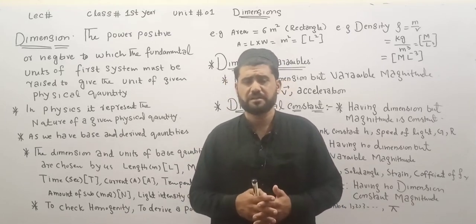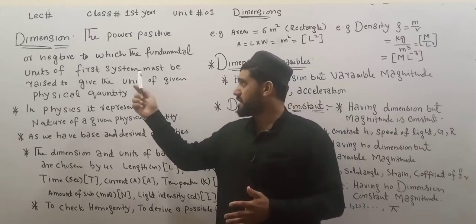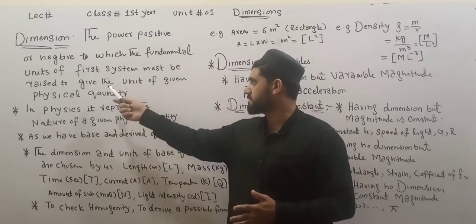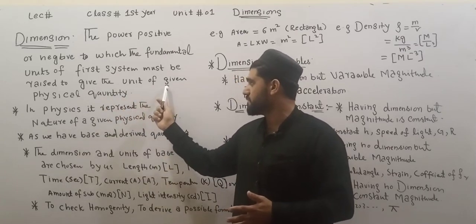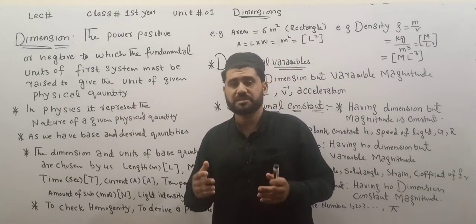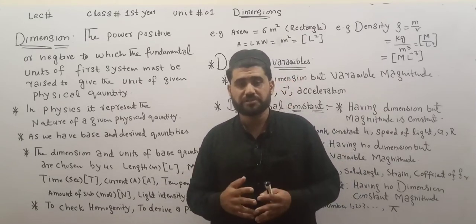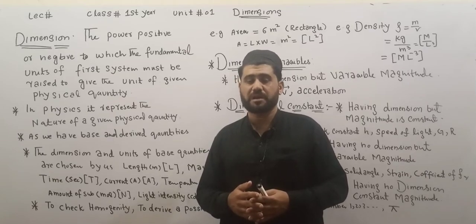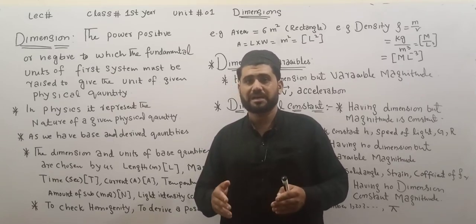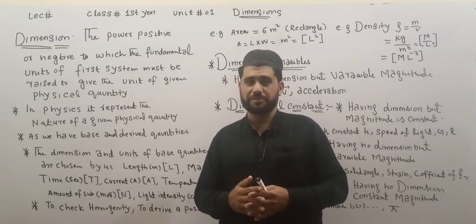Dimension definition: the power, positive or negative, to which the fundamental unit of the base system must be raised to give the unit of a given physical quantity. If I have a base system, the base units, the base quantities — the other quantity's expression gives the dimension.